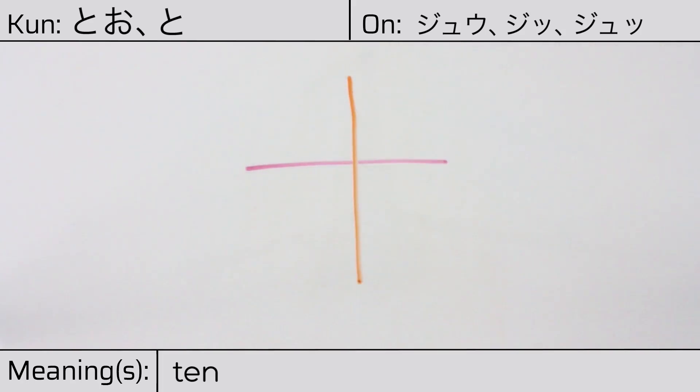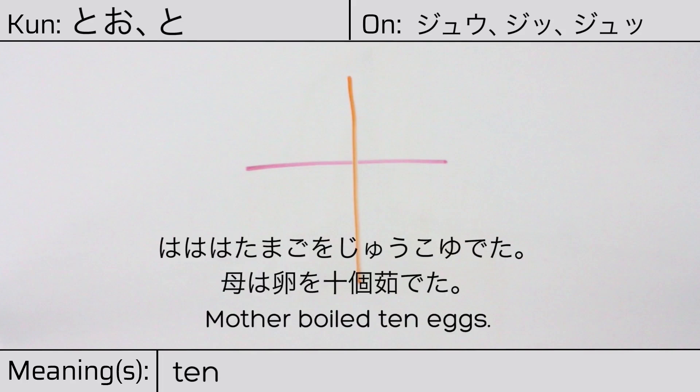Our example sentence is: Haha wa tamago wo jukko yudeta — Mother boiled ten eggs.